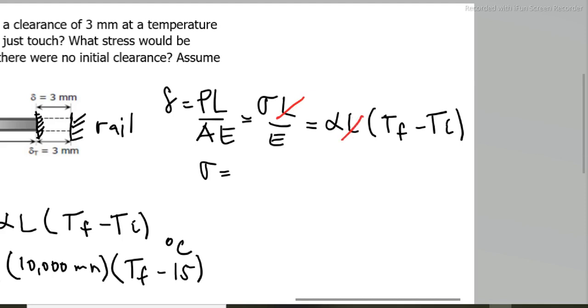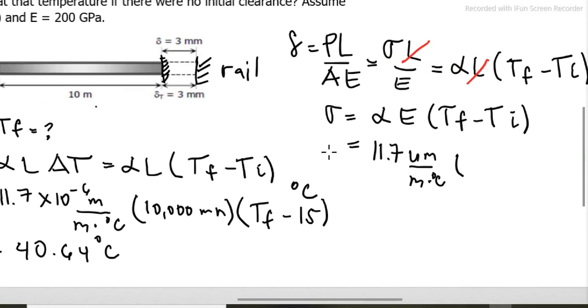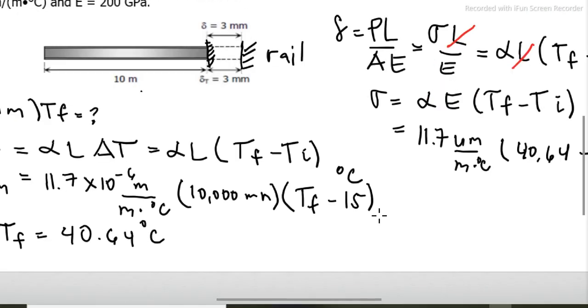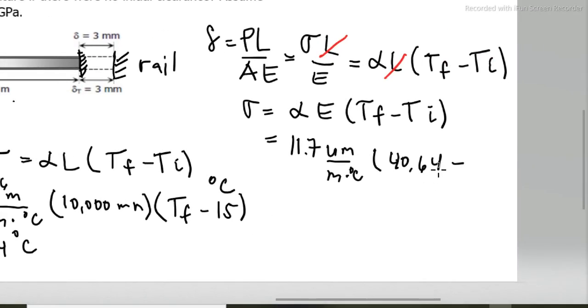Stress equals - cancel out the L. What remains is linear coefficient times modulus of elasticity times change in temperature. Linear coefficient of 11.7 micrometers per meter, times the final temperature we got of 40.68 degrees, 40.68 minus 15.